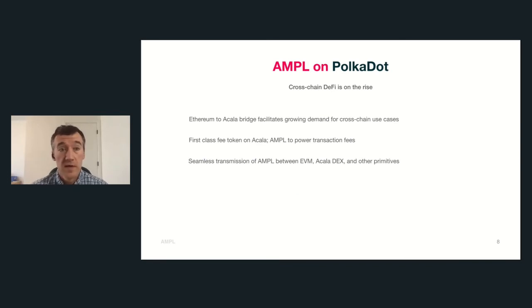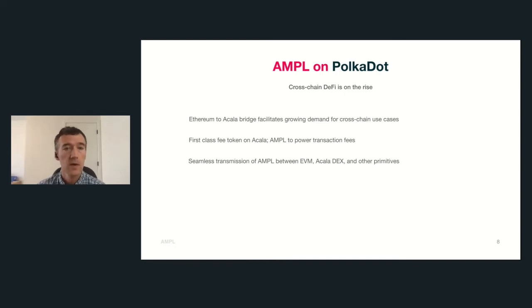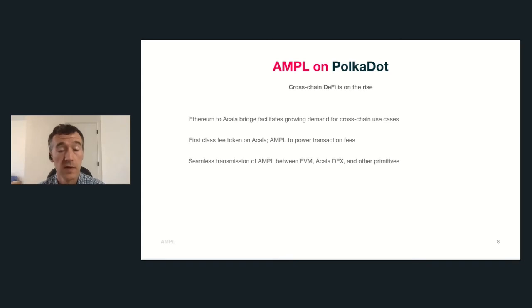We're really excited to bring Ample into the Polkadot ecosystem to help empower the decentralized finance stack. Our first entry into the space will be with Acala — we're really excited to be working with Acala. There'll be a bridge from Ethereum to the Acala ecosystem. Ample is planned to be used as a first-class fee token within the Acala ecosystem, enabling it to power transaction fees. There will also be seamless transmissions of Ample between the EVM, Coladex, and other primitives. This should be coming out over the course of this year, in line with the development of the ecosystem. It's been live on Ethereum, but I can't wait to see it on other platforms as well.